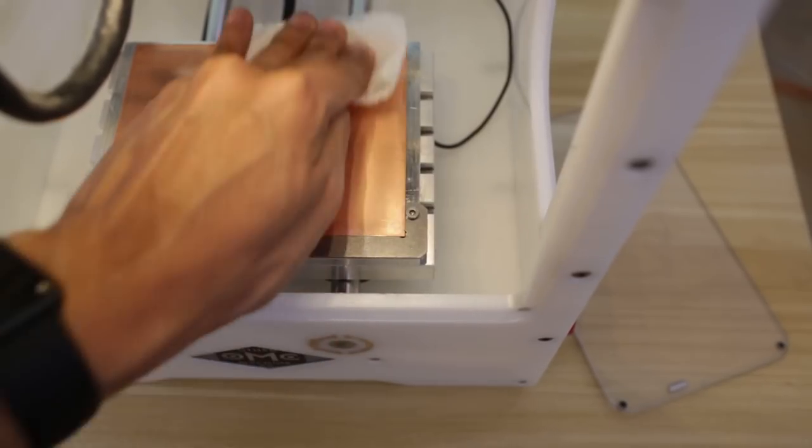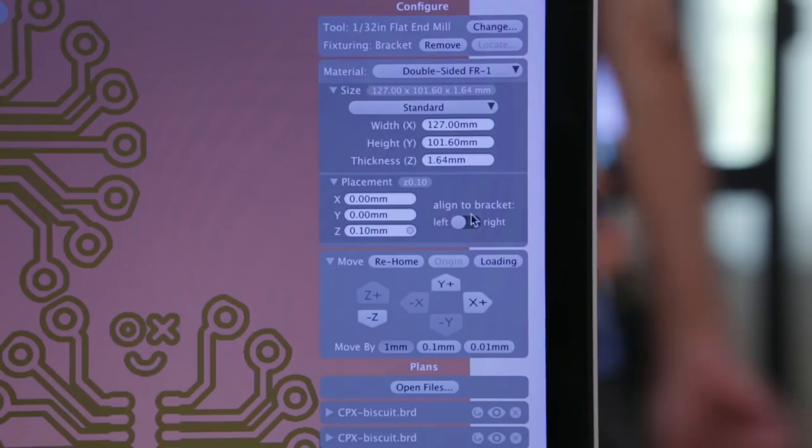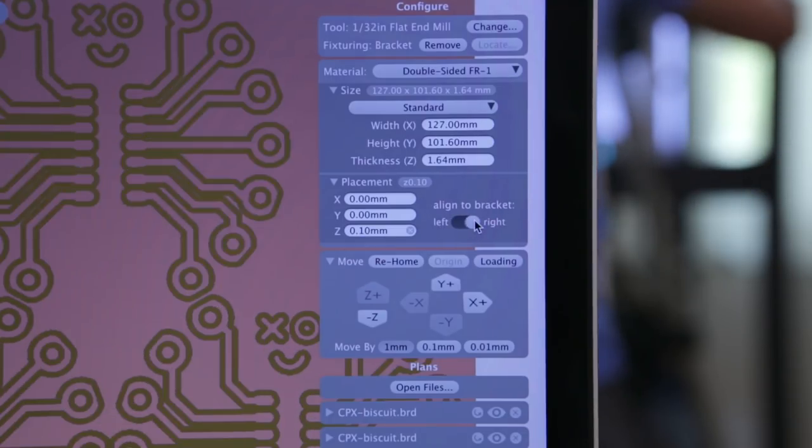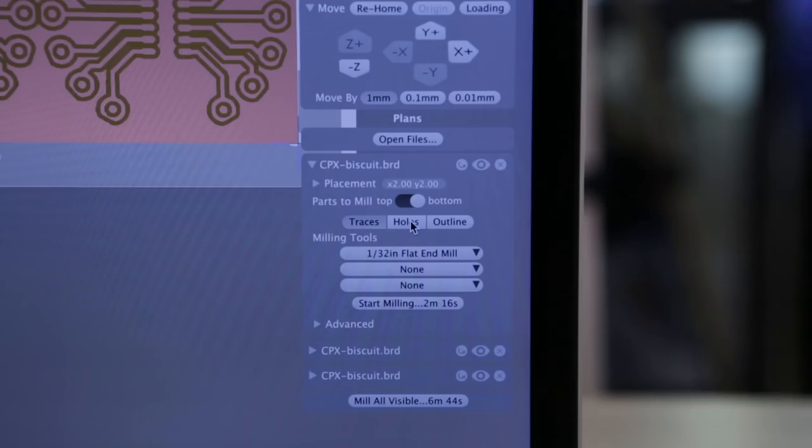Once again it's a good idea to wipe down the surface. In the software we need to make sure to set the bracket to the right side. Also need to turn on the holes in the outline for each board.